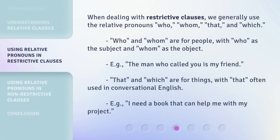When dealing with restrictive clauses, we generally use the relative pronouns who, whom, that, and which. Who and whom are for people, with who as the subject and whom as the object. For example: 'the man who called you is my friend.' That and which are for things, with that often used in conversational English. For example: 'I need a book that can help me with my project.'